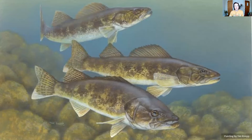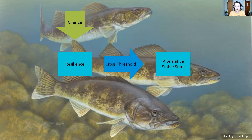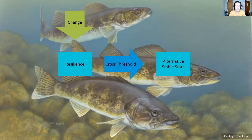Looking at another example from lakes — these are walleye. Let's think about a walleye population. There are lots of changes that can happen in a lake, around the lake, and to a lake that can affect the walleye population. Maybe there's shoreline development so there are fewer trees for juvenile fish to hide in. Maybe there are more anglers catching the fish. Maybe the water is warming to a point that walleye are uncomfortable in. All of those things affect the resilience of this fish population. At some point they won't be able to handle it anymore and will cross the threshold into an alternative stable state, which could be a lake without walleye.